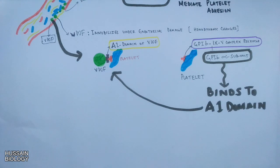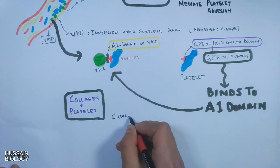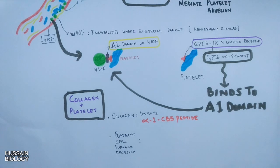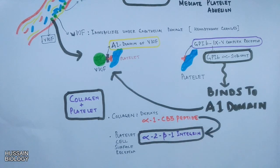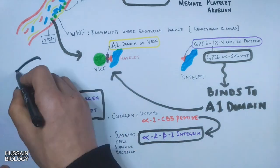Now let's see how collagen interacts with platelets. In the collagen-platelet interaction, collagen displays the alpha-1 CB3 peptide, while on the platelets we have cell surface receptors in the form of alpha-2 beta-1 integrin. During endothelial damage, the integrin receptor binds the CB3 peptide of collagen and mediates binding of the platelet to collagen, adhering platelets at the damaged site. There is also a GP6 protein which shows interaction with collagen.